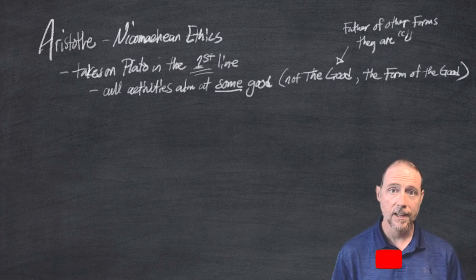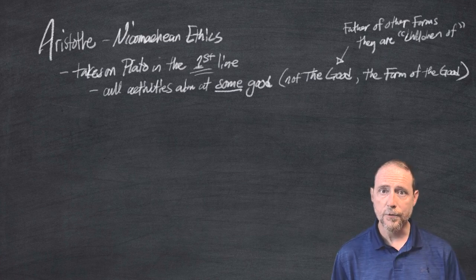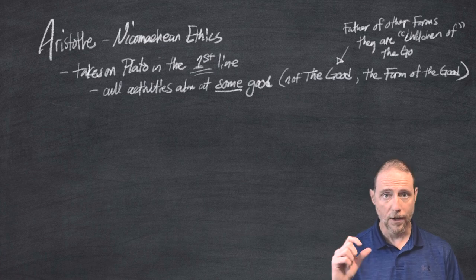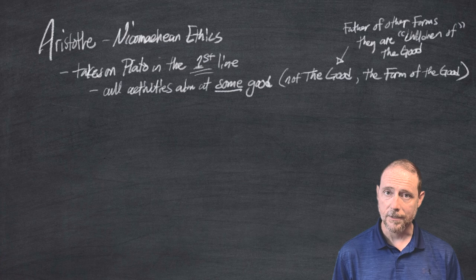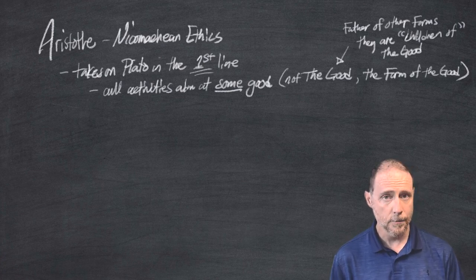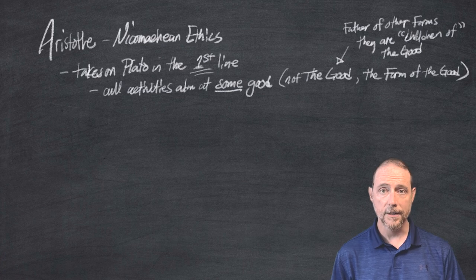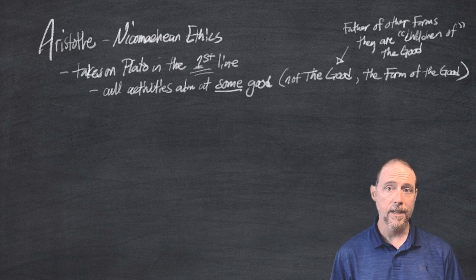We'll hear this later with Neoplatonism. The good is kind of important for Plato. And so for Aristotle to come out in page one, first sentence, to disagree with that is really significant. In saying that all things aim at some good, he's telling us that there are many goods and that they can all be different and that all things aim at different stuff.